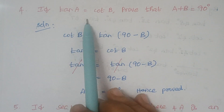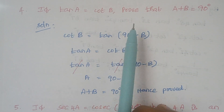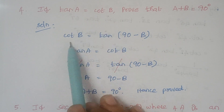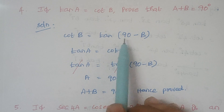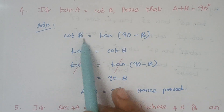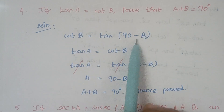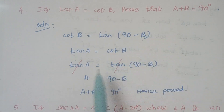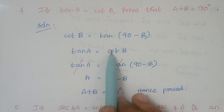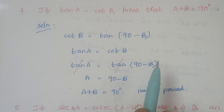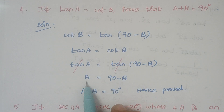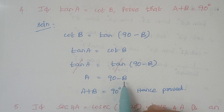So tan A is equal to cot B. Now I am writing cot in terms of tan — that is, cot theta is equal to tan(90 minus theta). In the place of theta I am having B, therefore it becomes tan(90 minus B). So the given expression tan A equals cot B becomes tan A equals tan(90 minus B).